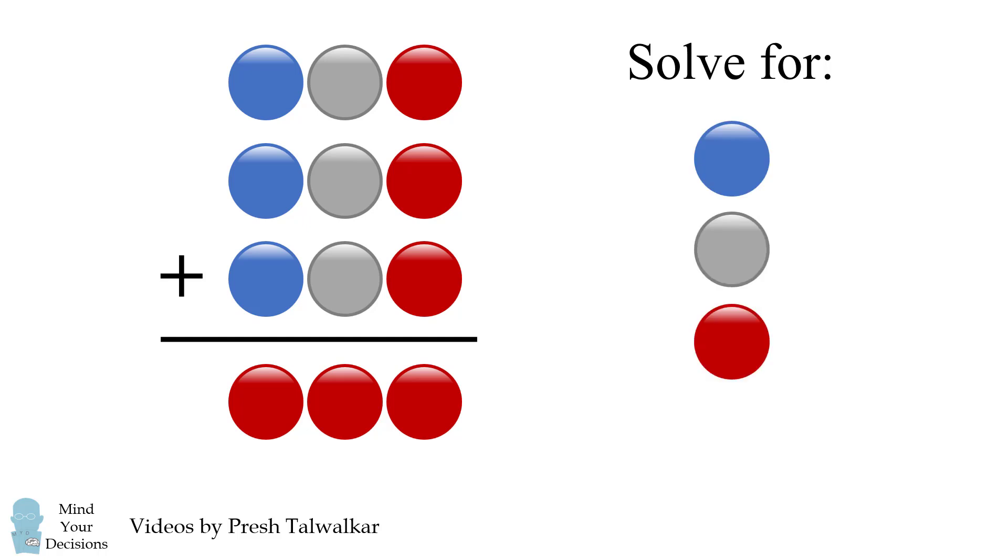It helps them understand how to solve them and it helps build their confidence in math. This puzzle can be described as follows: We have a three-digit number represented by a blue circle followed by a gray circle followed by a red circle. This three-digit number is added together three times to produce another three-digit number represented by three red circles.